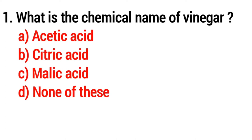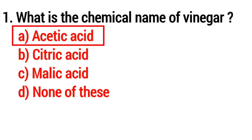Question number 1. What is the chemical name of vinegar? Option A: Acetic Acid. Option B: Citric Acid. Option C: Malic Acid. Option D: None of these. The correct answer is Option A, Acetic Acid.